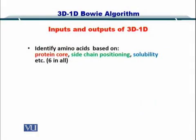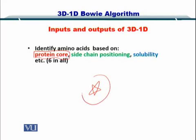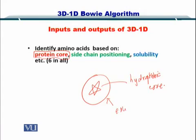Let's see how it works. For the 3D-1D algorithm, the inputs and outputs are as follows. The first step is to identify the amino acids that are in the protein core. As you know, the protein has a hydrophobic core and external structures. You have to identify the amino acids within this core. This is step number 1.